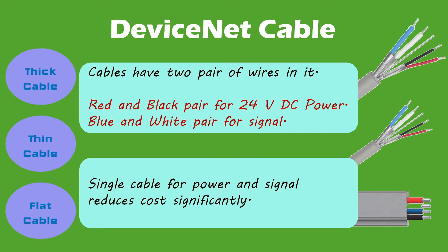In our last video, we came to know that DeviceNet uses three types of cable. These three types of cable have two pairs of wires. The red and black pair is used for providing 24V DC power to the connected nodes. The blue and white pair is used for signaling, i.e., information exchange. Power and signal are on the same cable, which is a great advantage in terms of cable laying cost, as only one cable is sufficient instead of separate power and signal cables.